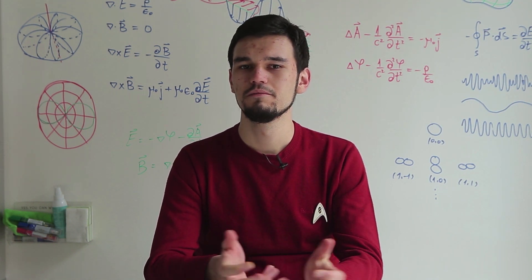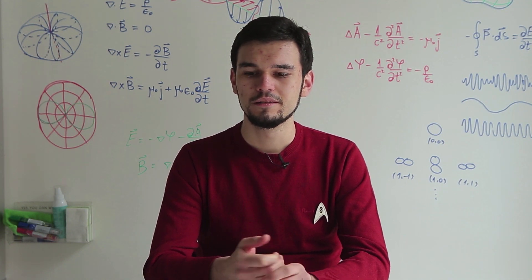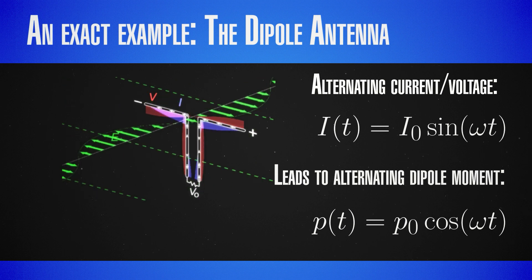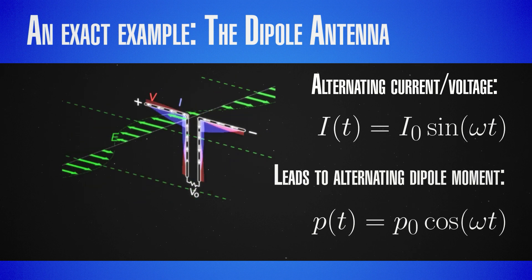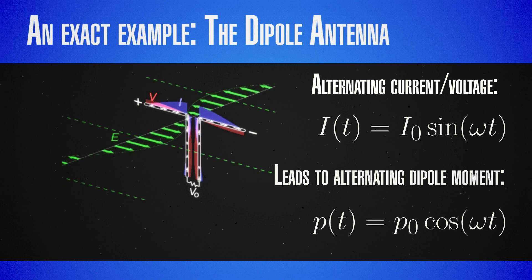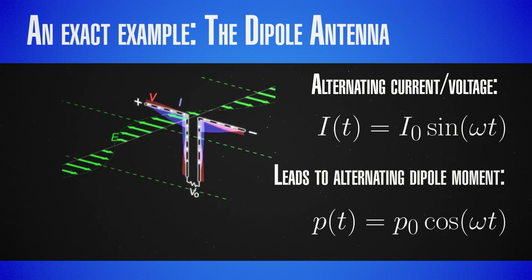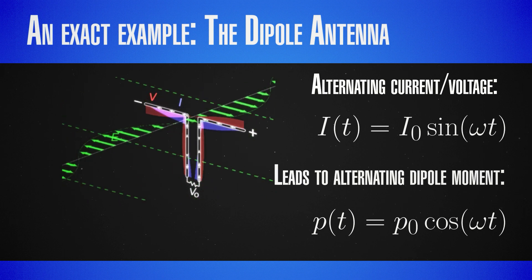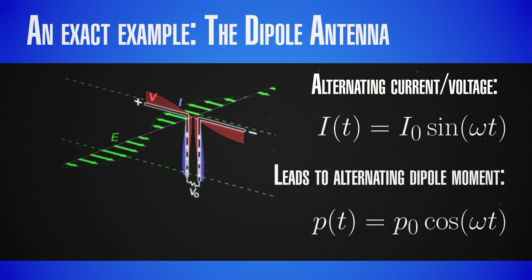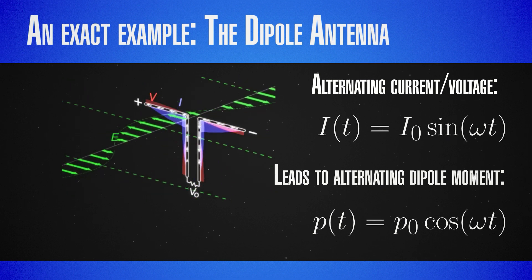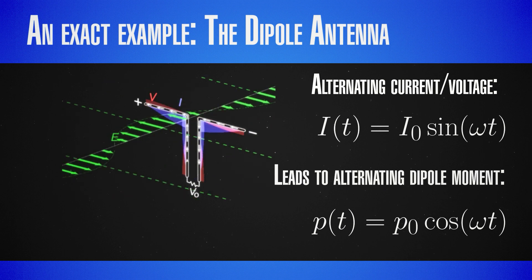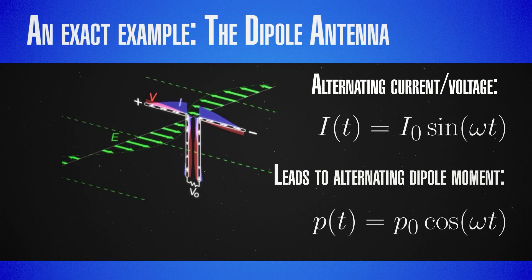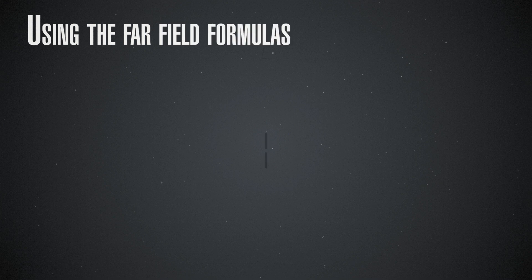A dipole antenna is simply an antenna which is a varying dipole. We have an alternating current — considering the simplest case of sinusoidal radiation with no information carried. We're feeding this antenna: it has two poles, one connected to the positive of our source and the other to the negative, with alternating voltage leading to alternating current, which in turn leads to an alternating dipole moment. If we had some initial dipole moment p₀, the dipole moment as a function of time is p₀ times a cosine or sine depending on the initial phase. Applying the far-field formulas to this dipole antenna gives us the following expressions for the electric and magnetic fields.